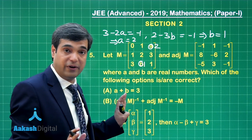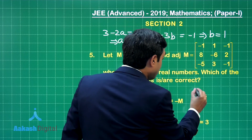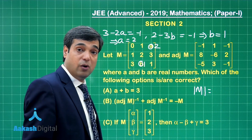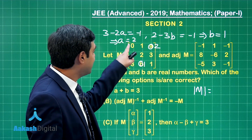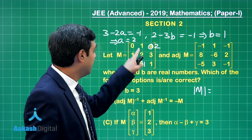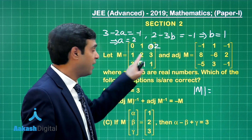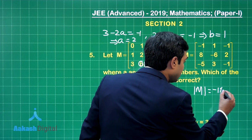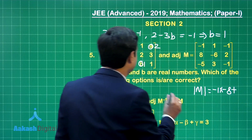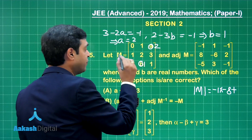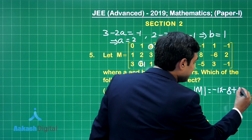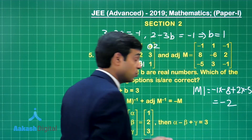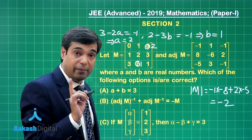We obtain matrix M. Let us find its determinant. When you try to find the determinant of matrix M, you get 0 multiplied with something, then minus 1 multiplied with 1 minus 9, so it is minus 1 into minus 8, plus 2 multiplied with 1 minus 6, giving 2 into minus 5. The value is minus 2, so determinant of M is minus 2.